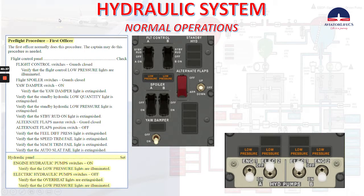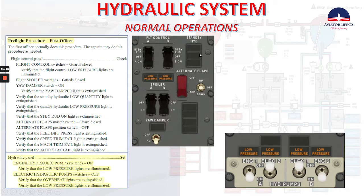Now let's talk about the pre-flight procedure, usually done by the first officer. For the flight control panel check: flight control switches guards closed; verify that the flight control low pressure lights are illuminated; flight spoiler switches guards closed; yaw damper switch on; verify that the yaw damper light is extinguished; verify that the standby hydraulic low quantity light is extinguished; verify that the standby hydraulic low pressure light is extinguished; verify that the standby rudder on light is extinguished; alternate flaps master switch guard closed; alternate flap position switch off; verify that the feel differential pressure light is extinguished; verify that the speed trim failed light is extinguished; verify that the MACH trim failed light is extinguished; and verify that the auto slat failed light is extinguished.